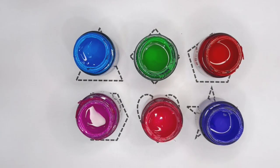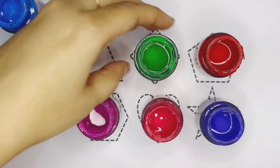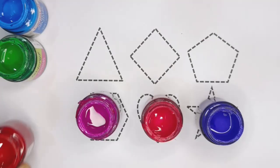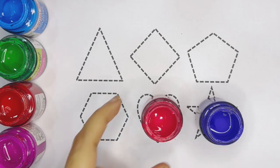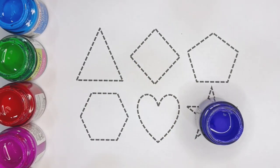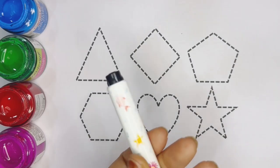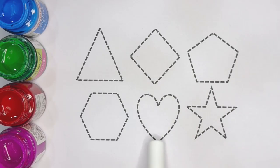Hello kids, welcome to new video. Today we will learn 2D shapes. These are the 2D shapes. First we will learn the name of the colors kids: light blue color, light green color, red color, dark pink color, light pink color, blue color. This is black color. The shapes are: triangle, diamond, pentagon, hexagon, heart, star.